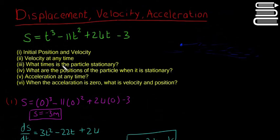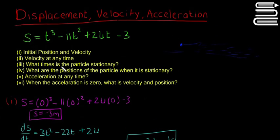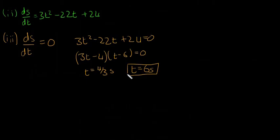What times is the particle stationary? So stationary means when it's not moving. When it's not moving, it means when ds/dt equals zero. That means that 3t squared minus 22t plus 24 equals zero. And take notice, it says what times is the particle stationary? As we see here, we have a quadratic, so we're going to find two answers. So it's going to be stationary at two times. If we factorize this, we're going to get 3t minus 4 times t minus 6 equals zero. And so that means that t is going to be equal to 4/3 seconds, or t equals 6 seconds.